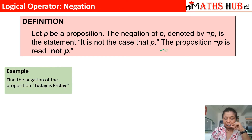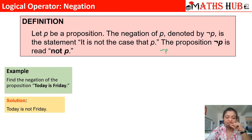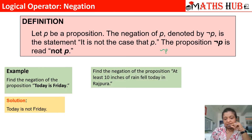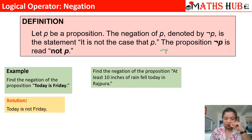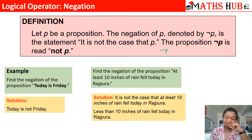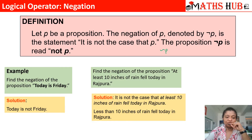For example, if I tell you to find the negation of the proposition 'Today is Friday', the negation would be 'Today is not Friday' — as simple as that. Another example: find the negation of 'At least 10 inches of rain fell today in Rajpara'. Here 'at least' means a minimum of 10 inches. So the negation would be 'Less than 10 inches of rain fell today in Rajpara', or equivalently 'At most 9 inches of rain fell today in Rajpara'. You just have to negate the given statement.